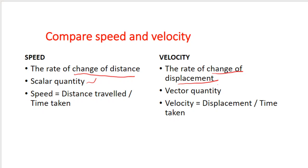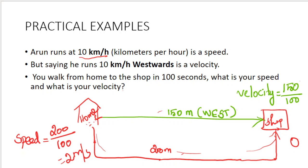Let us see some practical examples. Arun runs at 10 kilometers per hour — this represents speed, because only the magnitude is given and no direction is mentioned. But if he runs 10 kilometers per hour westwards, that is velocity because the direction is added. So speed plus direction represents velocity.